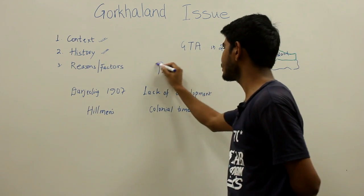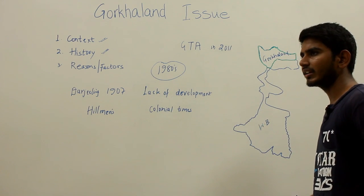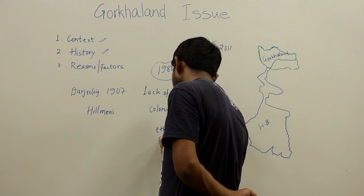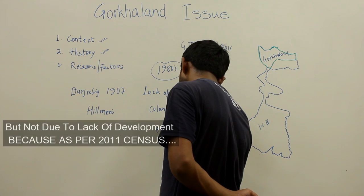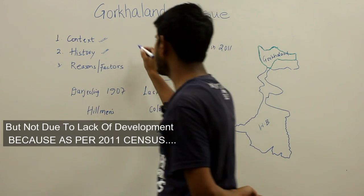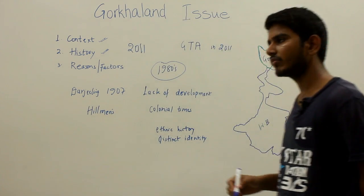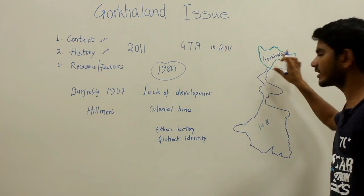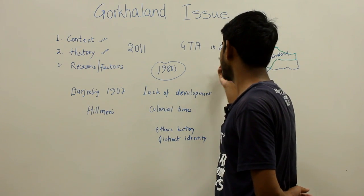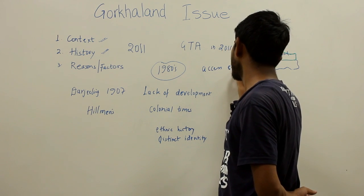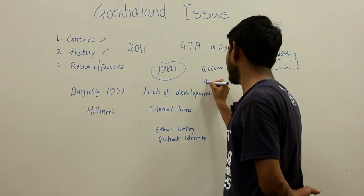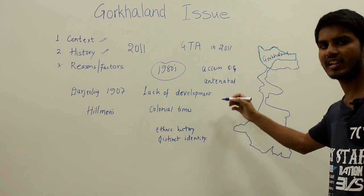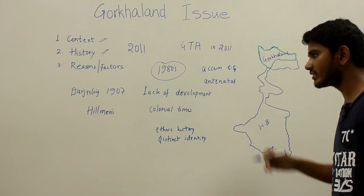The demand for a separate state is based on the ethnic history and distinct identity of the Gorkhaland people. As per the 2011 census data, the Gorkhaland region people are not lagging behind the rest of Bengal. In fact, in some parameters they are ahead, such as access to cooking gas, the share of mothers who received full antenatal care, lower rates of undernourished children, and a higher literacy rate compared to the rest of Bengal.